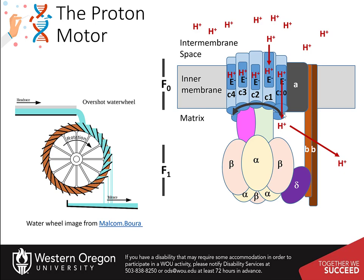That subunit is now empty and can be filled again when the C subunits shift positions, generating a rotational motor driven by the proton motive force. If the proton gradient is depleted, then the motor will shut off.